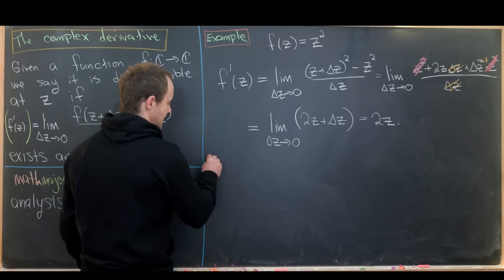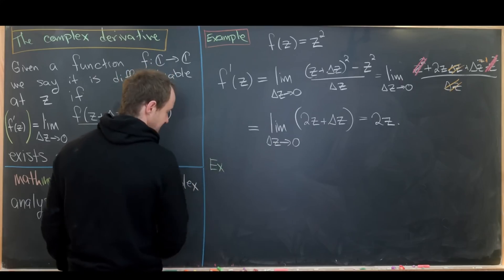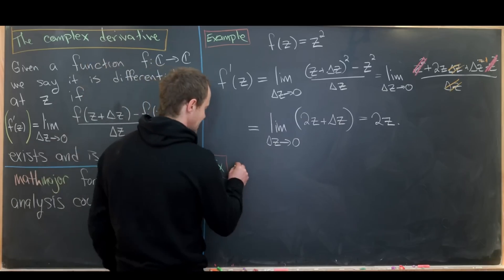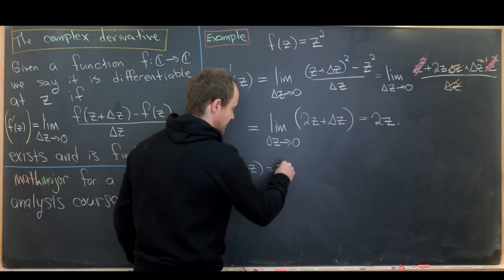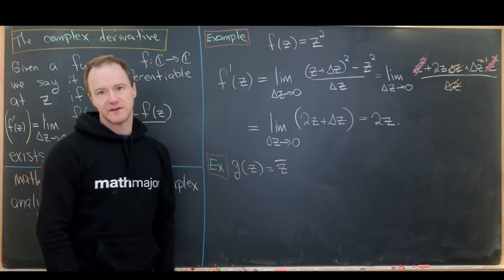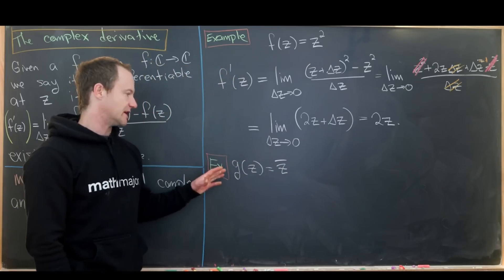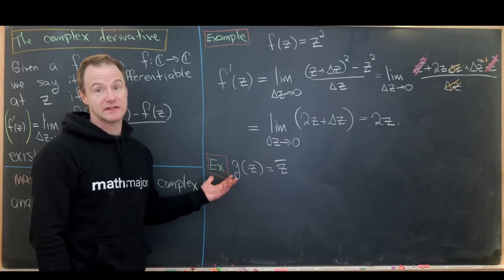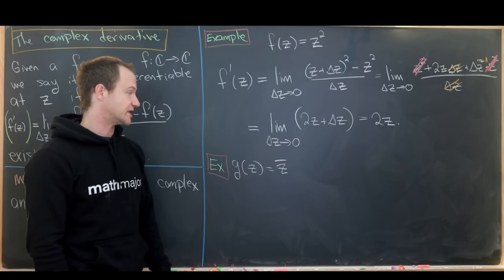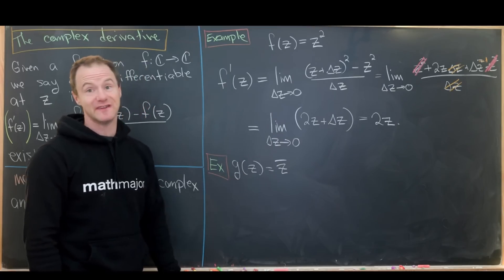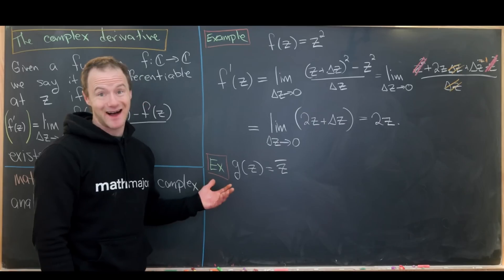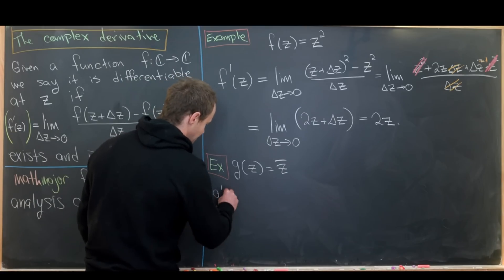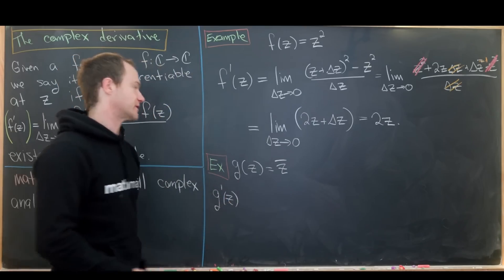Now let's look at an example that's not quite so nice: the complex conjugate function g(z) = z̄. On the surface this seems like it should behave well — it's almost the simplest thing you can do to a complex number other than leave it alone. But what we'll see is that this function does not have a complex derivative. Let's try to find it via the difference quotient.